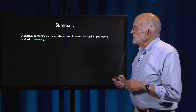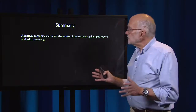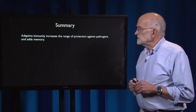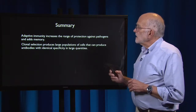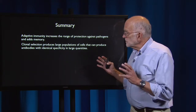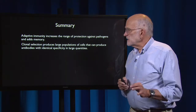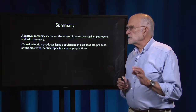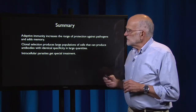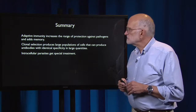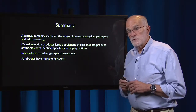To summarize: adaptive immunity increases the range of protection against pathogens and adds memory. Clonal selection produces large populations of cells that can produce antibodies with identical specificity in large quantities. Intracellular parasites get special treatment. Antibodies have multiple functions, and each defense strategy has corresponding types of autoimmune and allergic diseases.